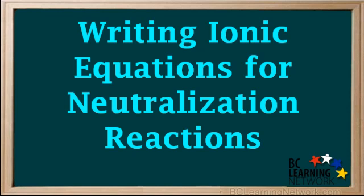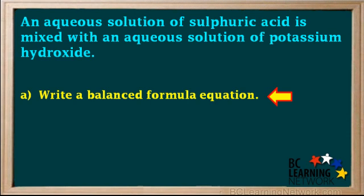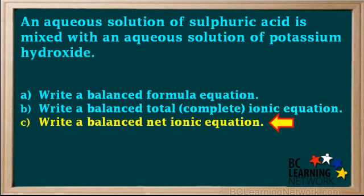In this video, you'll be shown a step-by-step procedure for writing formula, total ionic, and net ionic equations for a neutralization reaction. An aqueous solution of sulfuric acid is mixed with an aqueous solution of potassium hydroxide. Write a balanced formula equation, a balanced total or complete ionic equation, and a balanced net ionic equation for this reaction.